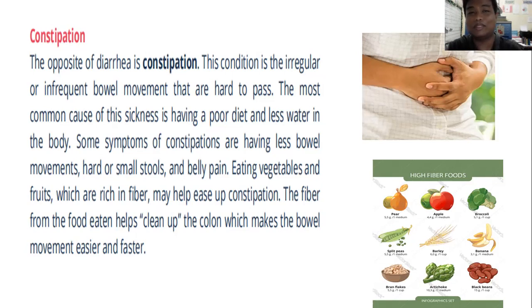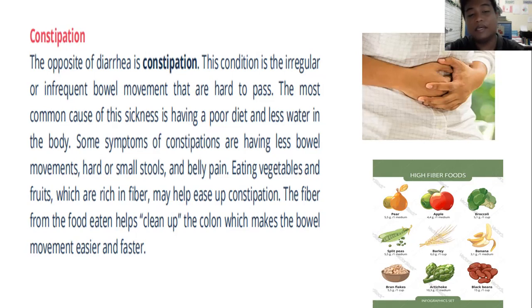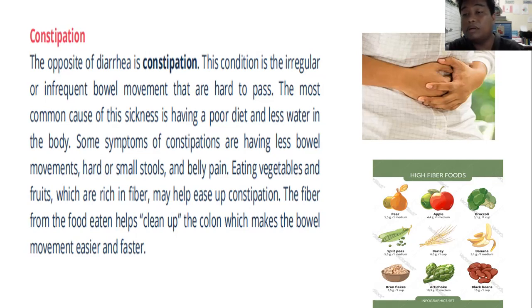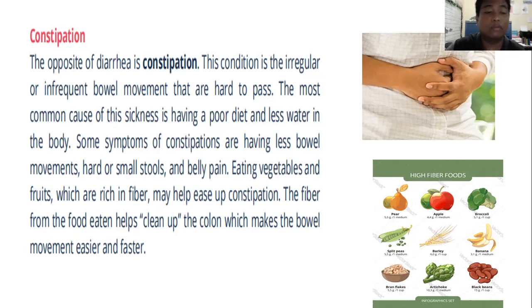Eating vegetables and fruits which are rich in fiber may help ease constipation. The fiber from food helps clean up the colon, which makes the bowel movement easier and faster. Foods high in fiber such as apple, broccoli, banana, and black beans can help normalize bowel movement.